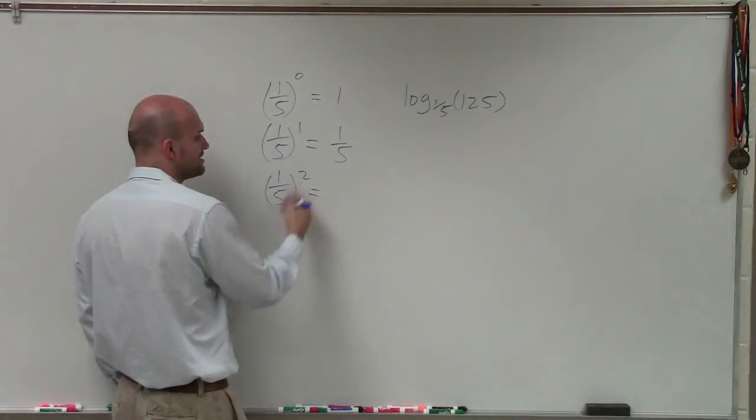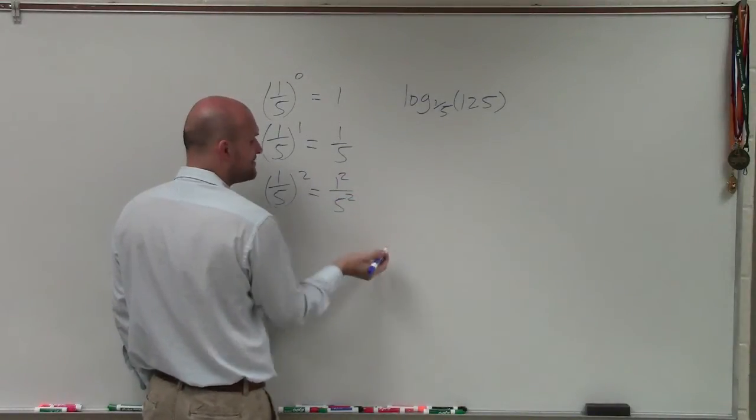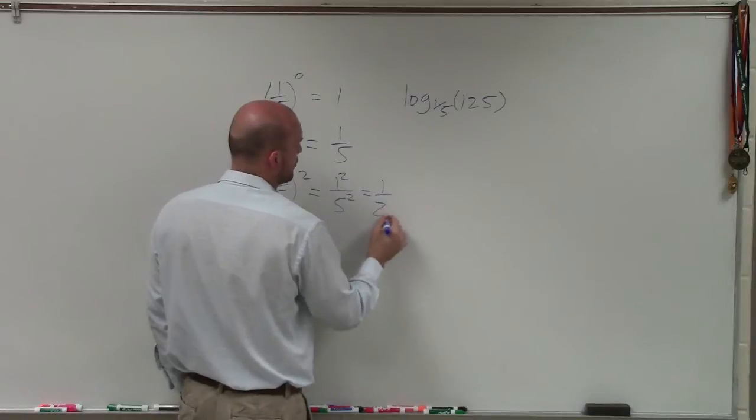1/5 squared, remember, is 1 squared over 5 squared, which is just going to equal 1/25.